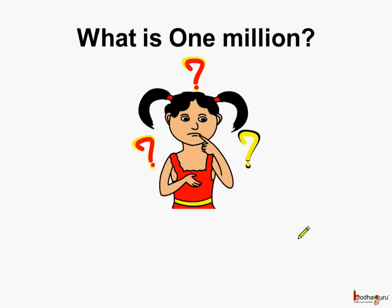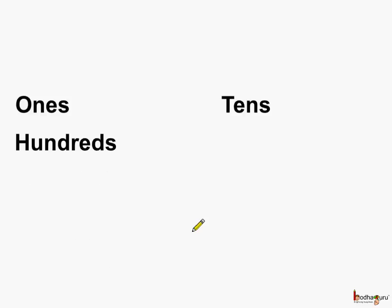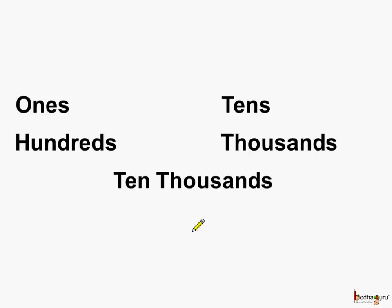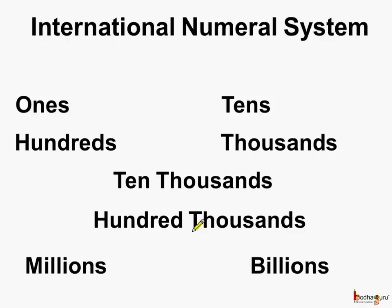Let us see. When we count in terms of ones, tens, hundreds, thousands, ten thousands, hundred thousands, millions, billions, etc., then we are talking about the international numeral system.